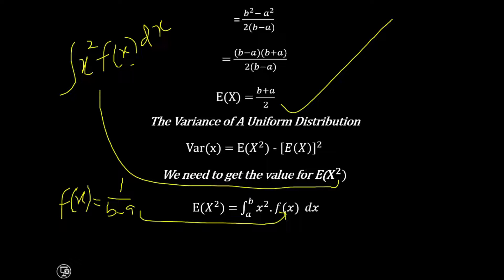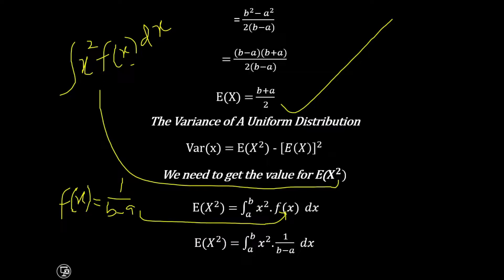Instead of f of x we put the uniform distribution density 1 over b minus a. Since 1 over b minus a is a constant it comes out, and we integrate x raised to power 2, which gives us x raised to power 3 divided by 3. We have 1 over b minus a multiplied by 1 over 3 multiplied by x raised to power 3, evaluated with limits a to b. We can bring the 1 over 3 outside the bracket to make substitution easier.